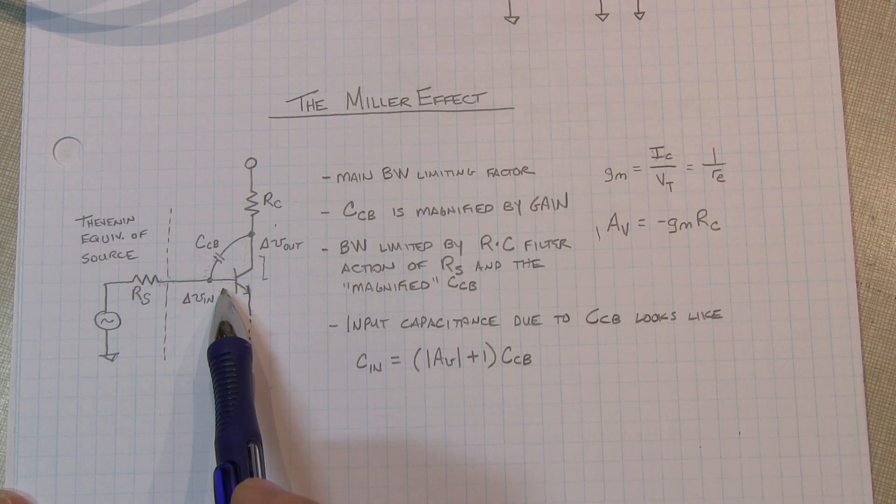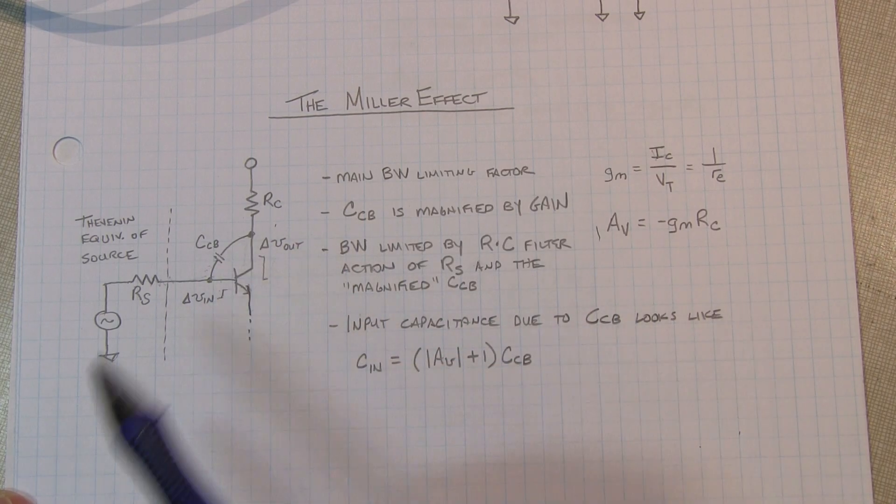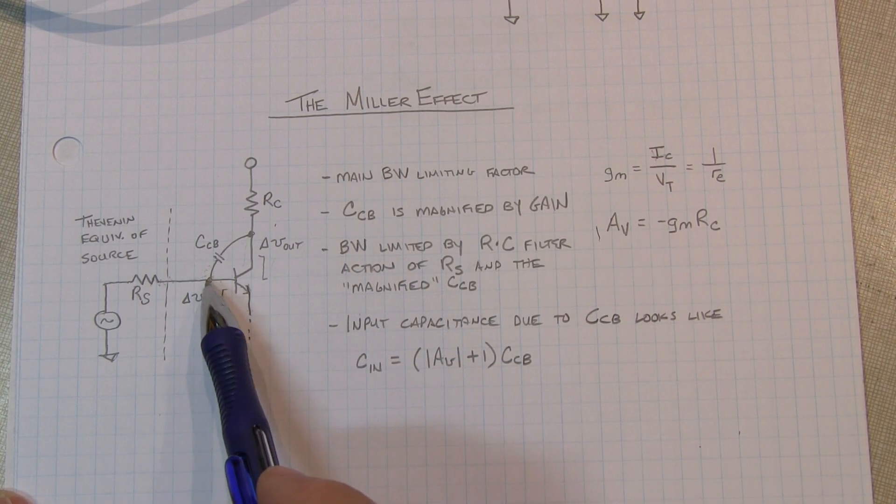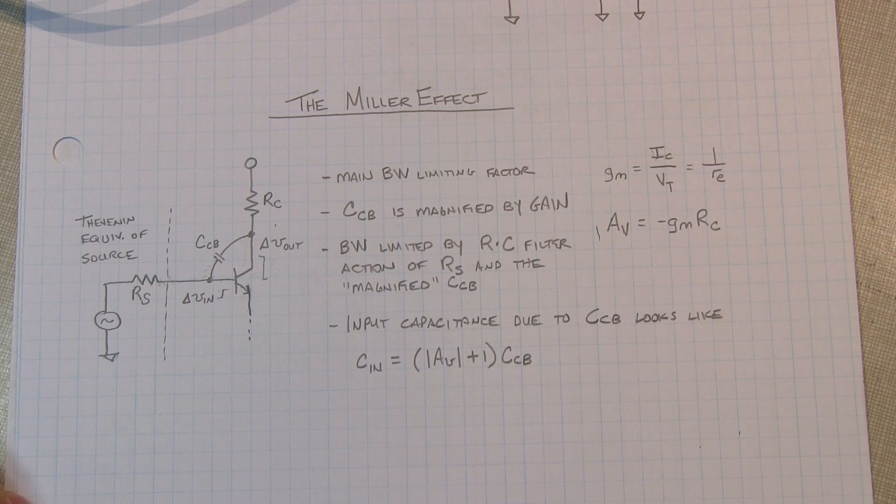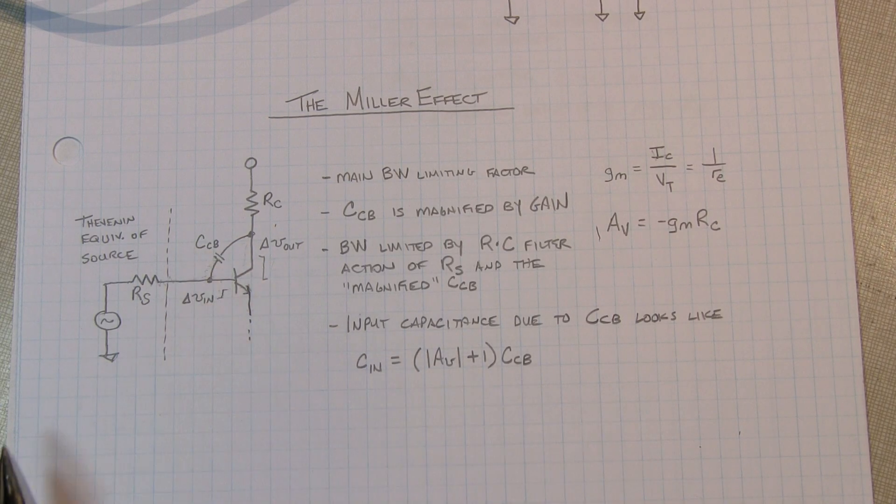So say a 1 volt change here would be a 1 volt change here, which would be a 2 volt change across that capacitor. So in effect, the capacitor looks just twice as big as it normally would be. But oftentimes a common emitter amplifier is used with gains much larger than 1, so the effect of the magnification of that collector base capacitance is pretty bad.